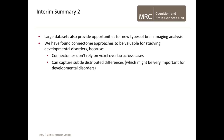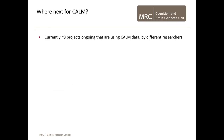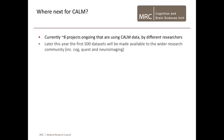So, large datasets also provide opportunities for new types of brain imaging analysis. We found that connectome features are very valuable for studying developmental disorders because they don't rely on voxel overlap across cases, they can capture subtle distributed differences which might be very important for disorders, they provide metrics of organisation that traditional measures can't, and very practically they reduce the massive multiple comparisons problem. We're hoping that over longitudinal time we can capture compensating or cascading effects within these models.